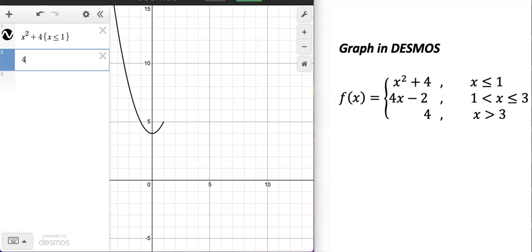Let's go ahead with the linear part, 4x minus 2 now. This is going to be for values of x between 1 and 3. Not including 1, including 3, right?